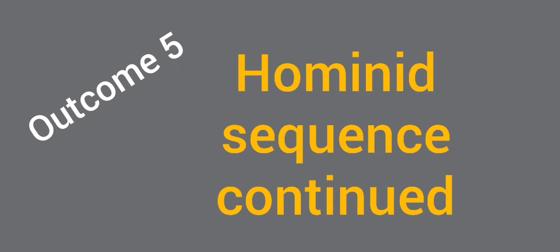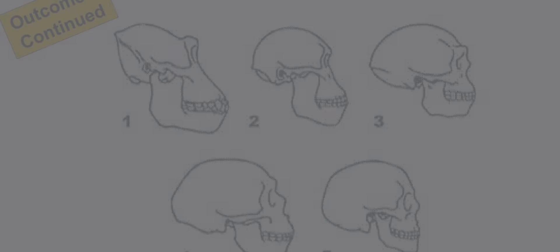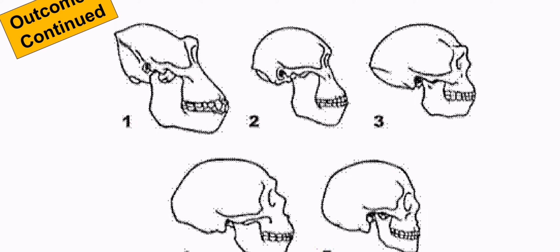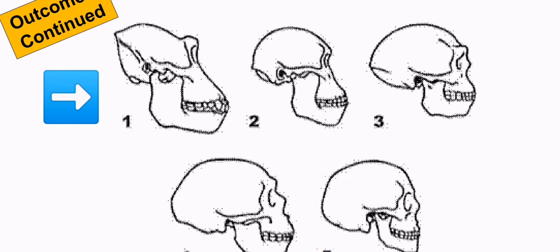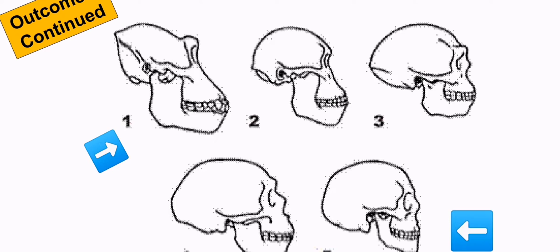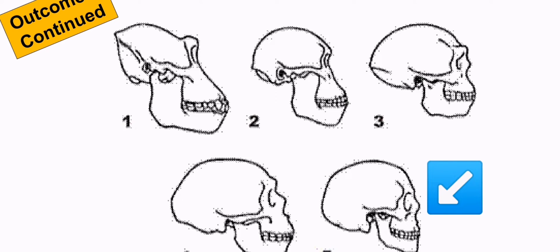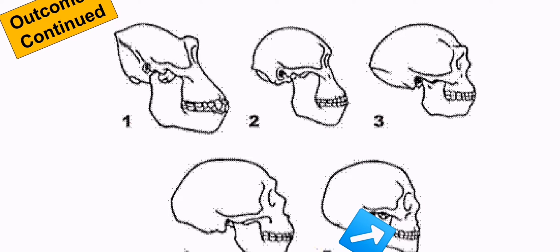We are currently busy with the hominid sequence, which is outcomes 5, and in this video we continue with that. So far we've learned how evolutionists believe that modern Homo sapiens evolved from an ape-like organism. As progression happens from number 1 to number 5 in this picture, the features of the skulls go from more ape-like to less ape-like. The face becomes flatter, the brain capacity becomes larger, the palate becomes rounder, and the shape of the mouth is flatter in humans than in apes - all features covered in video 1.